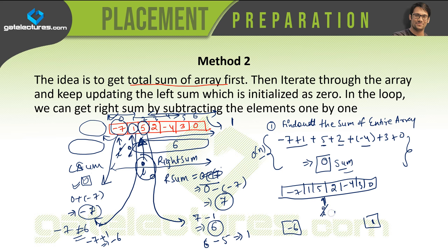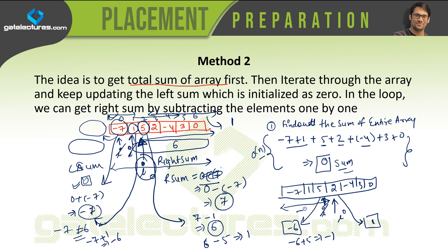We increment i again so it points to the next location (value = 2). We subtract 2 from right sum: 1 minus 2 = minus 1. And we add 5 to left sum: minus 6 plus 5 = minus 1. So this minus 1 and this minus 1 — both sums are equal. We can say this is the equilibrium point in the given array, and the problem is solved.